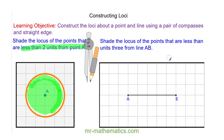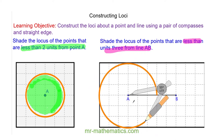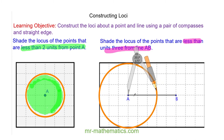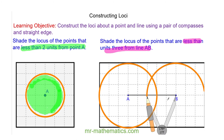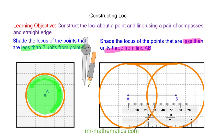For our next question, we are going to shade the locus of the points that are less than 3 units from line AB. To do this, I am going to draw a circle with centre A of radius 3 units, and I am going to do the same from point B. Now I am going to draw a parallel line 3 units above line AB, and 3 units below. The locus is within 3 units of the line AB, so I am going to shade the area inside of the construction.